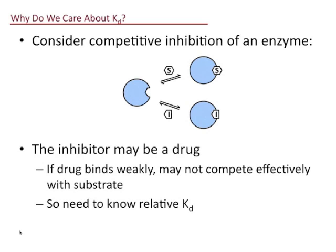Why do we care about KD? Consider one example where we're looking at the inhibition of an enzyme. If that blue little guy in the picture is your enzyme, it can either bind substrate S or it can bind an inhibitor I. We're interested in the relative strengths of binding of the substrate and the inhibitor, because if the inhibitor is a drug and it binds only weakly, the substrate is going to outcompete it for binding to the enzyme and you're not going to get any effect of your drug. We're interested in the relative KDs of things like substrates and drugs that might competitively bind to an enzyme.